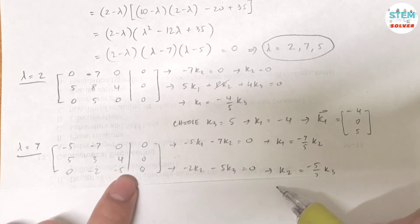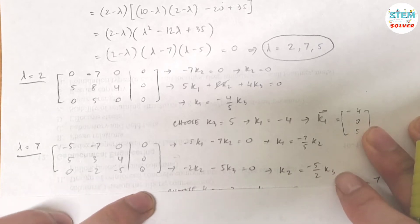Okay, now use the last equation. Negative 2k2 minus 5k3 equals 0. So solve for k2, I got negative 5 over 2k3. Right.